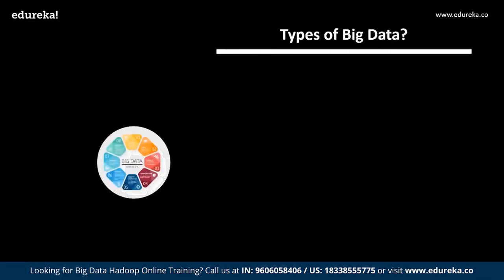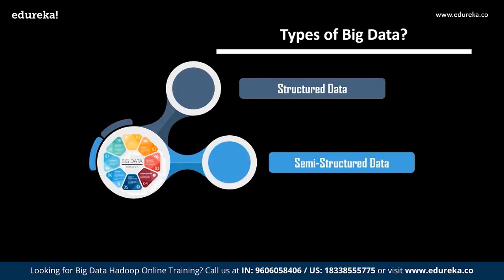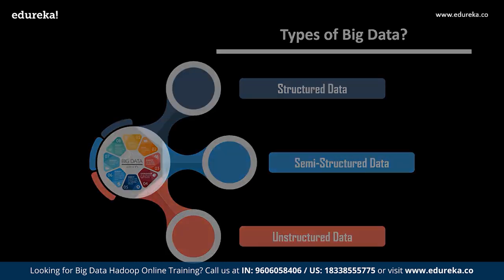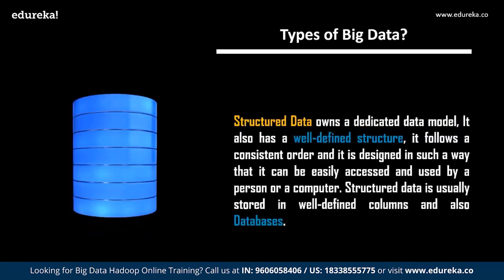Now let's understand the types of big data. Big data is generally characterized into three varieties: structured data, semi-structured data, and unstructured data. Structured data owns a dedicated data model — it has a well-defined structure, follows a consistent order, and is designed to be easily accessed by a person or a computer. It is usually stored in well-defined columns and databases, for example a simple DBMS.